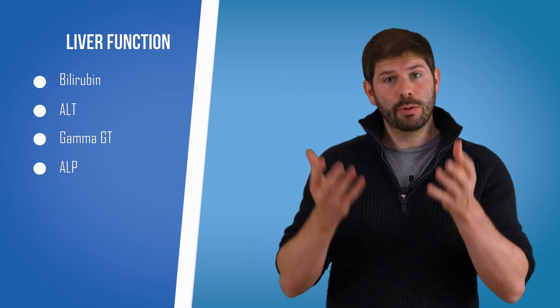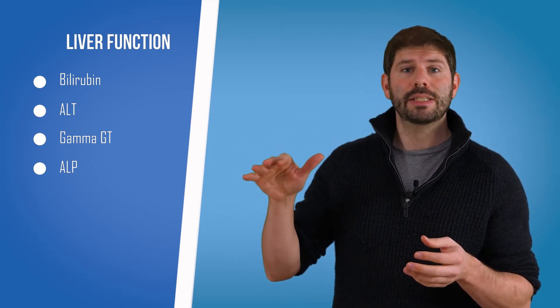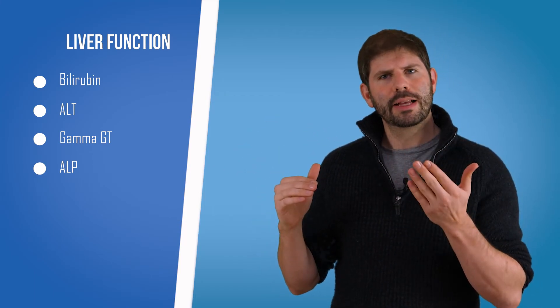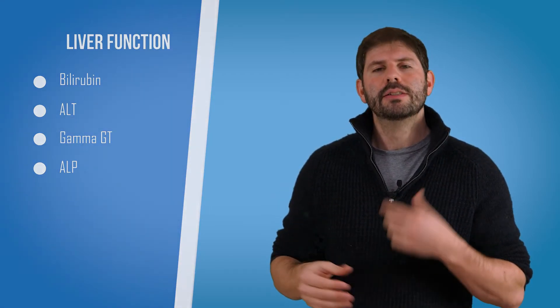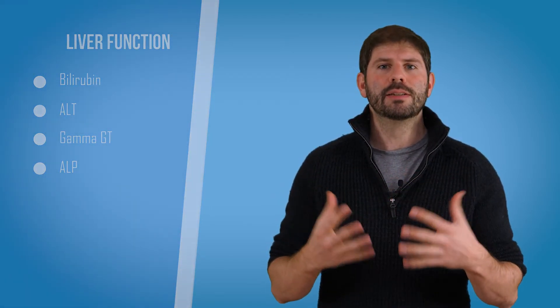Sometimes ALP will be high but your ALT and gamma GT might be normal, which might make us think that there's a problem in the bones. So it helps us differentiate and helps us figure out what might be causing you to feel a little bit sick.